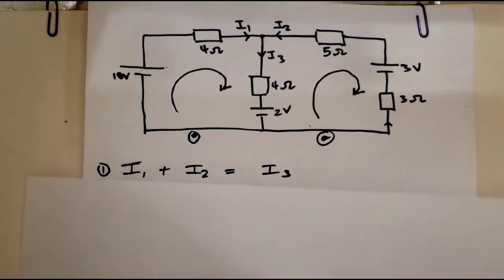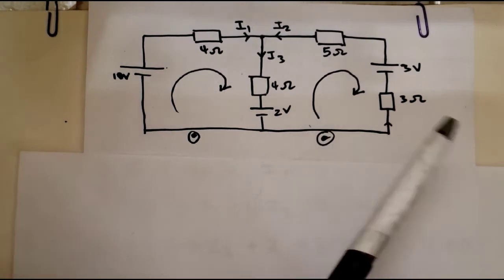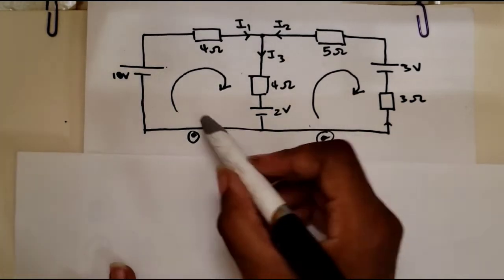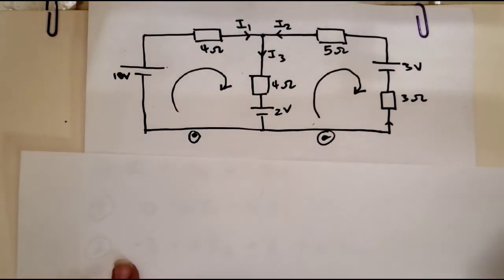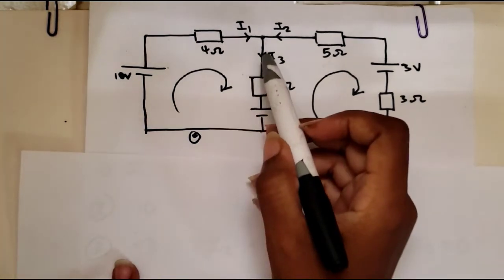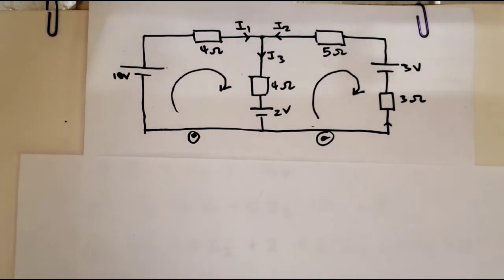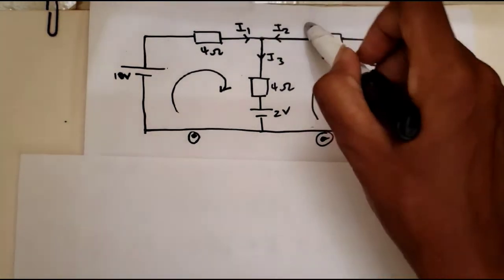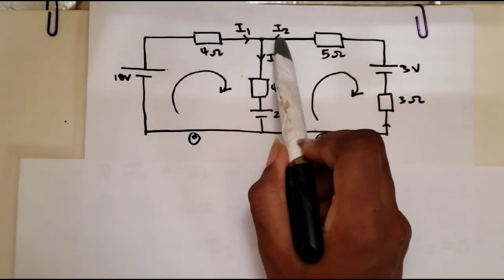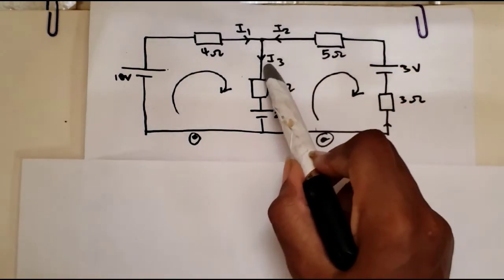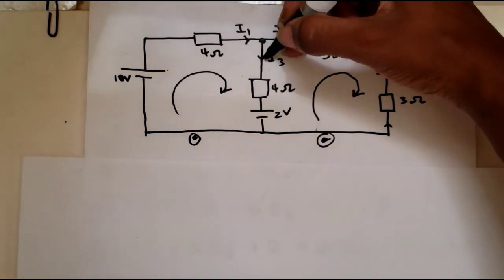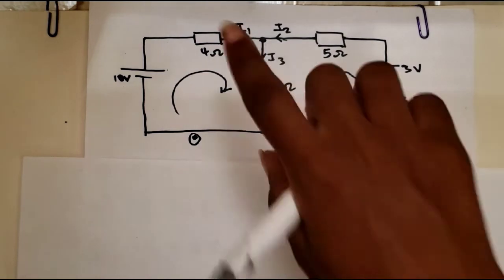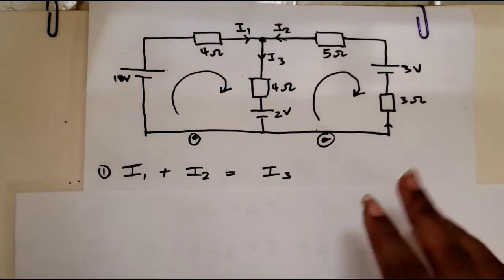The circuit I drew has two loops — Loop 1 and Loop 2. Kirchhoff's First Law states that the sum of the currents flowing into any point in a circuit equals the sum of the currents flowing out. Here, I1 plus I2 equals I3, because those currents flow into this junction and I3 flows out. That gives us our first equation.